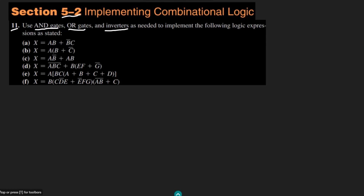Today we are going to talk about the first three parts, and in our next video we will talk about the remaining parts. Part A is X equal to AB plus B complement C.